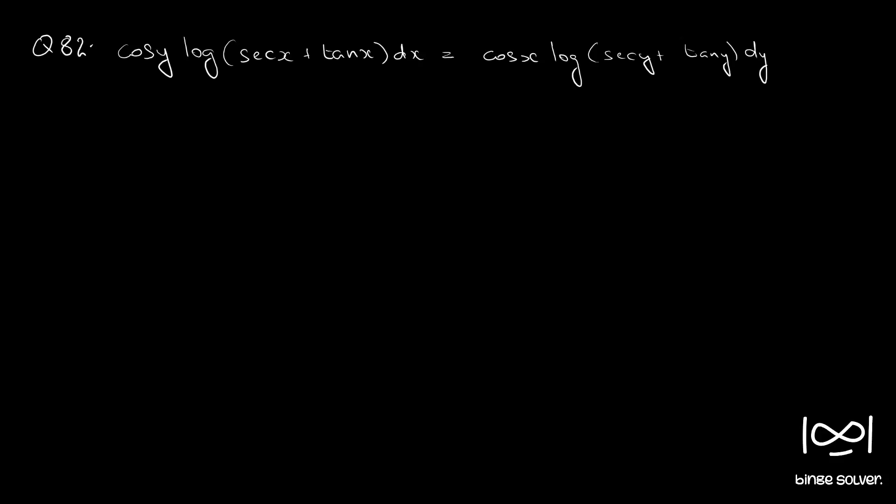Question 82 is going to be the last question from this section where we dealt with solving questions using the method of separation of variables. The question is: cos y · log(sec x + tan x) dx